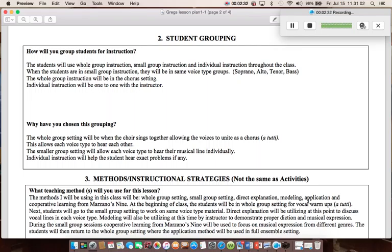The reason I have chosen this for grouping: the whole group setting will be when the choir sings together, allowing the voices to unite as a chorus, a tutti. This allows each voice type to hear each other. The smaller group setting will allow each voice type to hear their musical line individually. The individual instruction will help the student hear exact problems, if any.